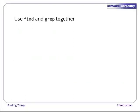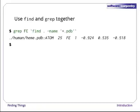It's very common to use find and grep together. The first finds files that match a pattern; the second looks for lines inside those files. Here, for example, we can find PDB files that contain iron atoms by looking for the string FE in all the PDB files below the current directory. If you've forgotten your high school chemistry, FE is the atomic symbol for iron.